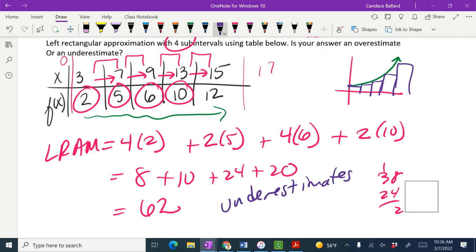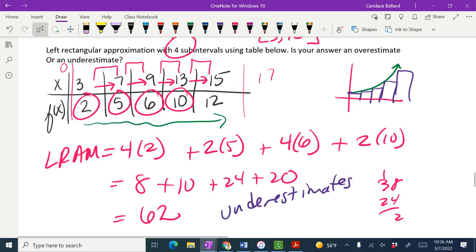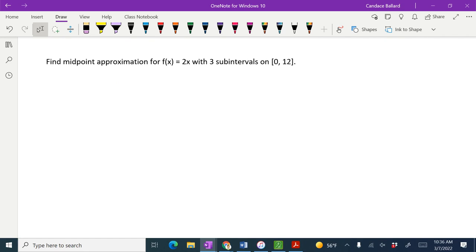All right, we're gonna do two more. There's four total because we want to practice one of each type. The next one is a midpoint approximation. Let's adjust this to 2x squared. 2x is a line, we don't need to estimate it. I was not thinking this morning when I wrote that.